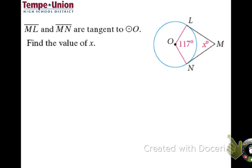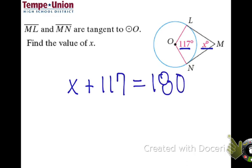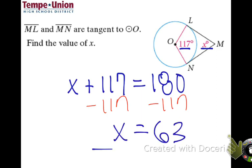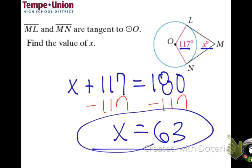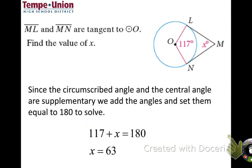Let's find some measures. We have a circumscribed angle and its associated central angle. Find the value of x. Since they're supplementary, we add them together and set equal to 180. Subtracting 117 gives us x equals 63.